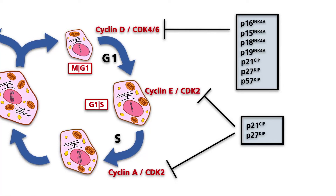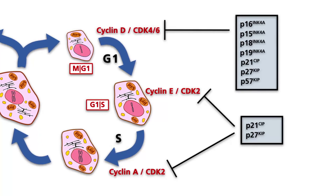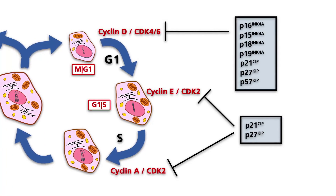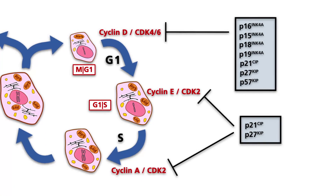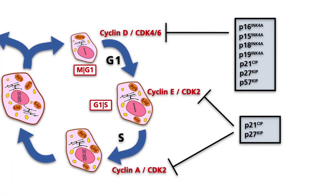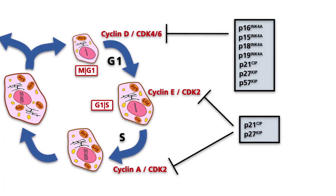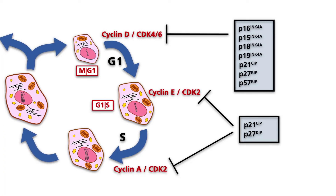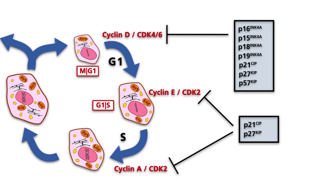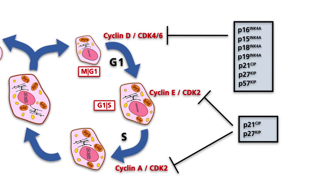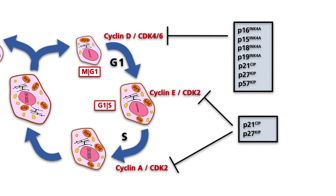This identifies the genes encoding CDK inhibitors as important tumor suppressor genes. In addition, many tumors show mutations in CDKs, which makes them insensitive to inactivation by CDK inhibitors. Thus, genes encoding CDKs and cyclins can act as oncogenes.